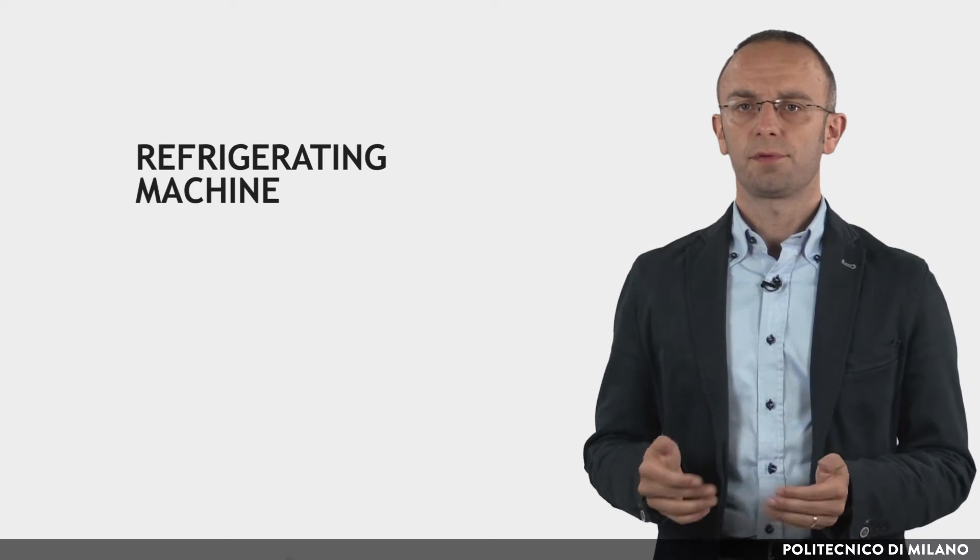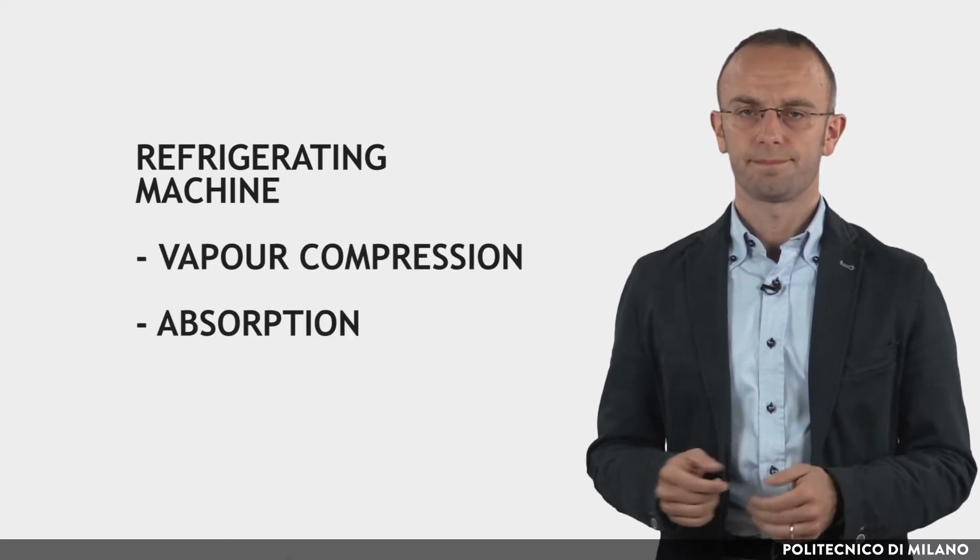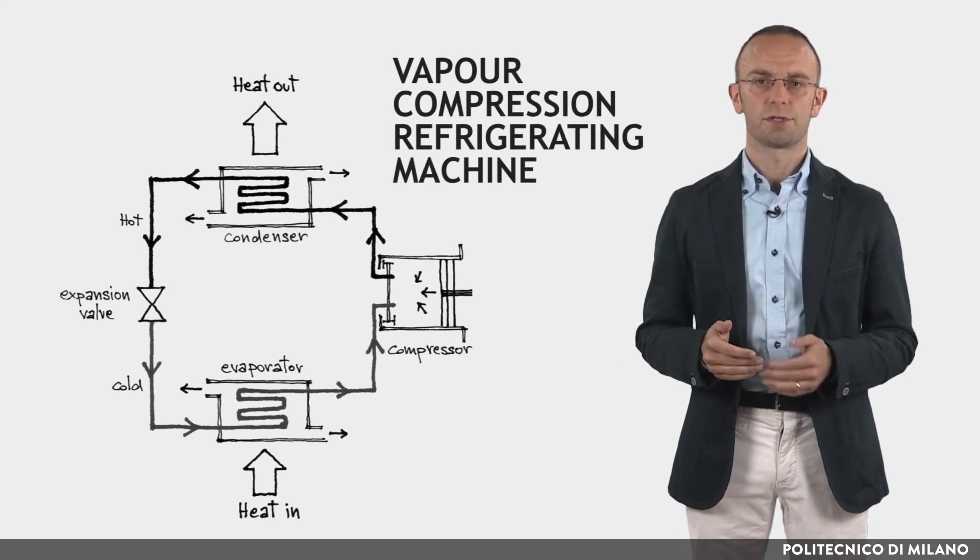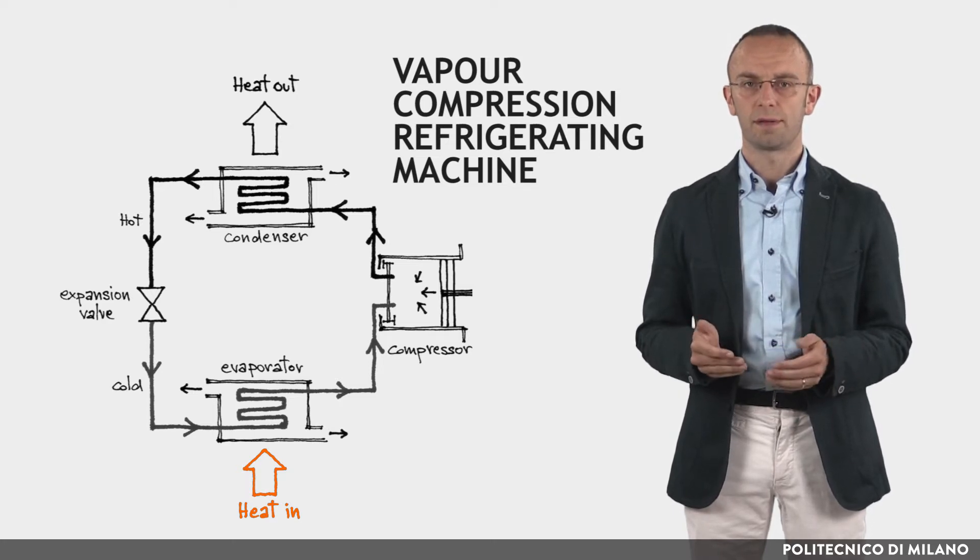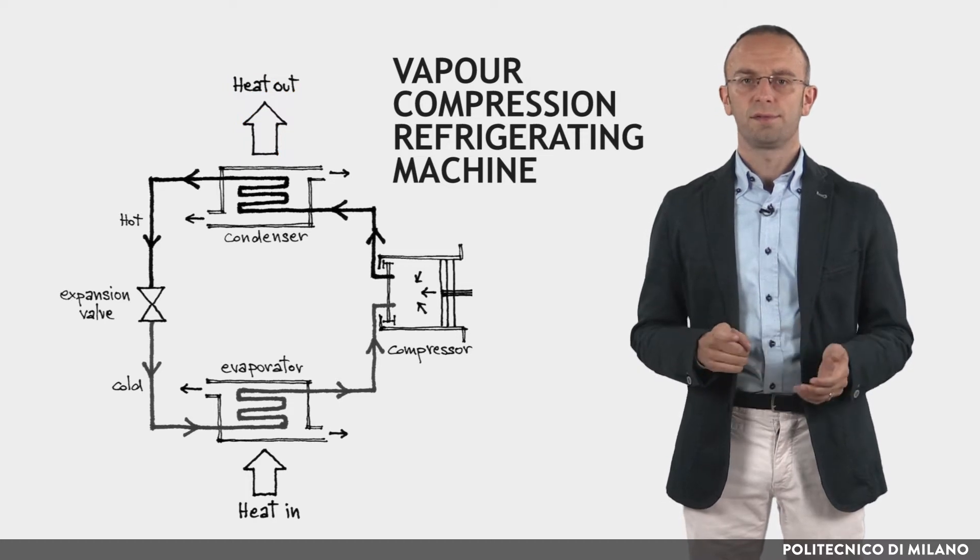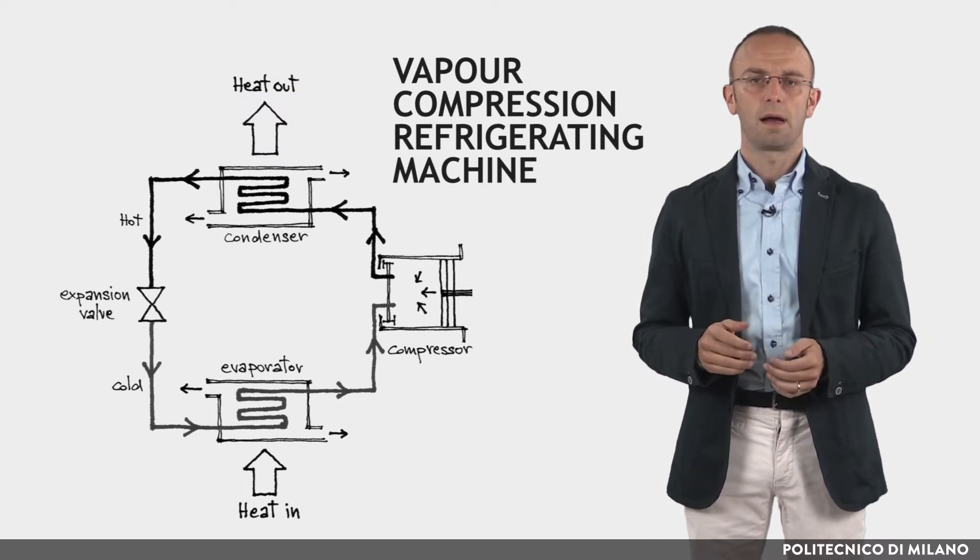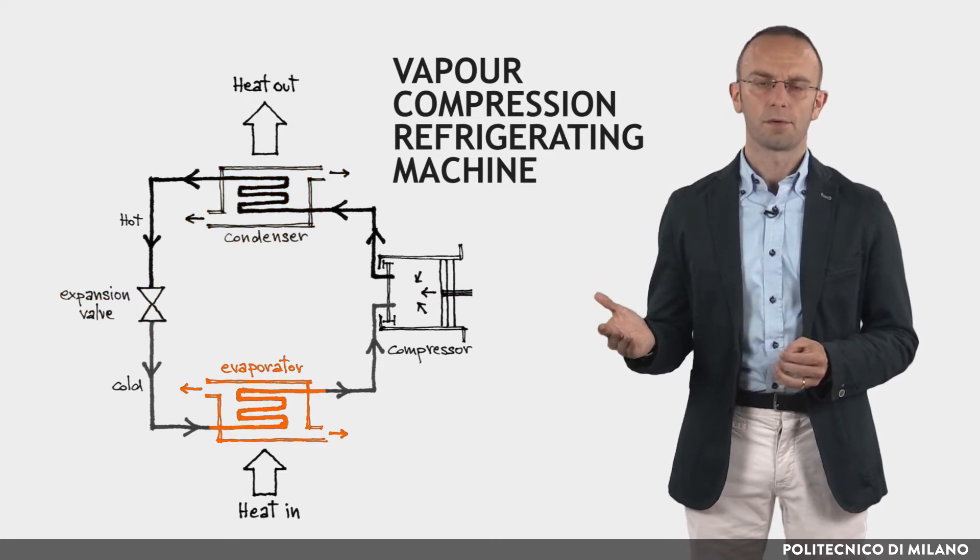There are two main types of refrigerating machine: vapor compression and absorption. Vapor compression refrigerating machines use a refrigerant that absorbs and removes heat from the space to be cooled and subsequently rejected elsewhere. Such systems have four components: a compressor, a condenser, a thermal expansion valve and an evaporator.